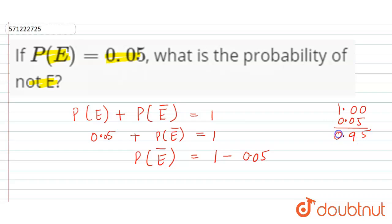And 9 minus 0 is 9, so 0.95. This is the probability of not E and this is the required answer, right?